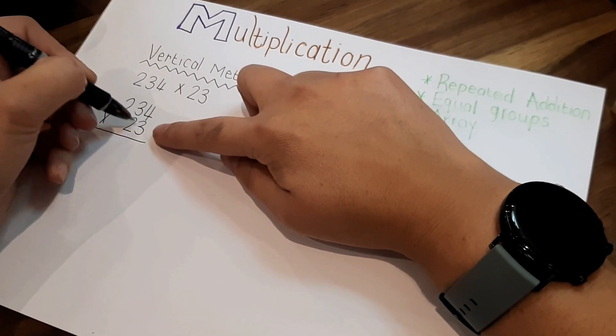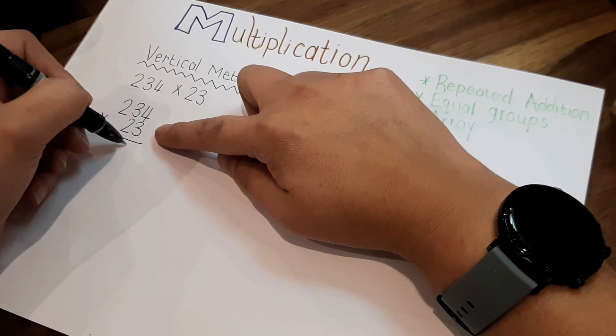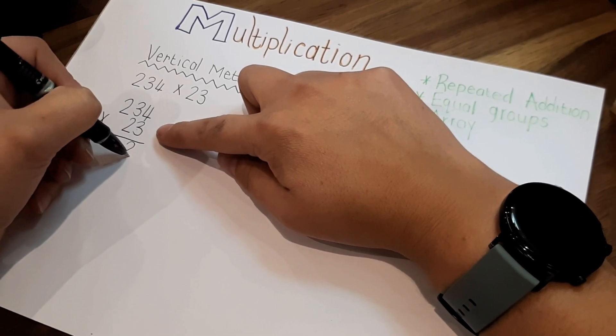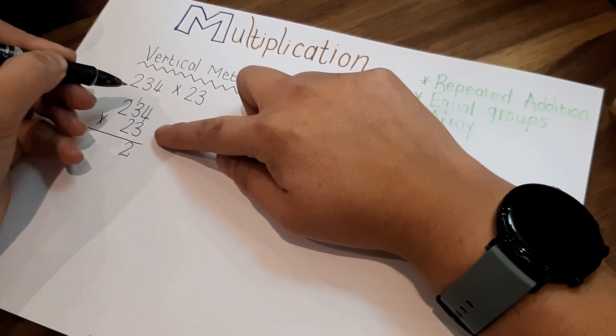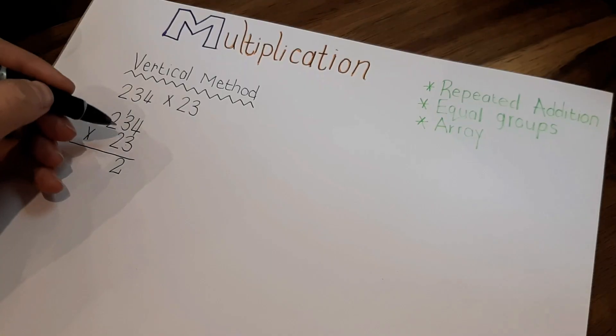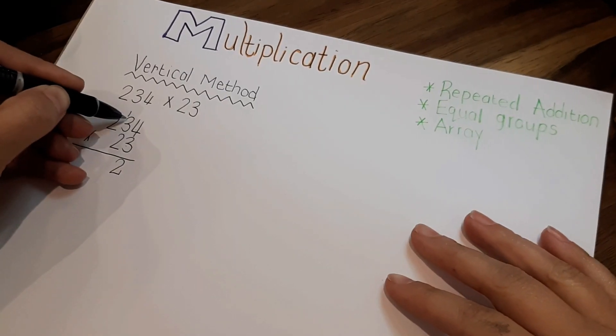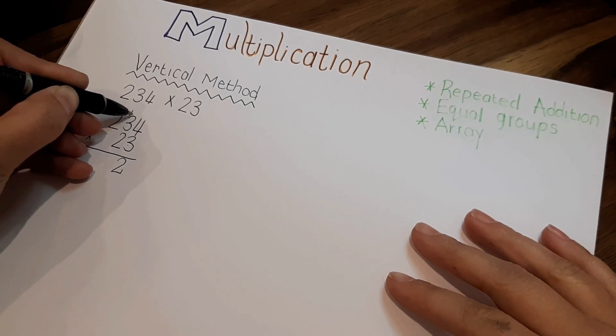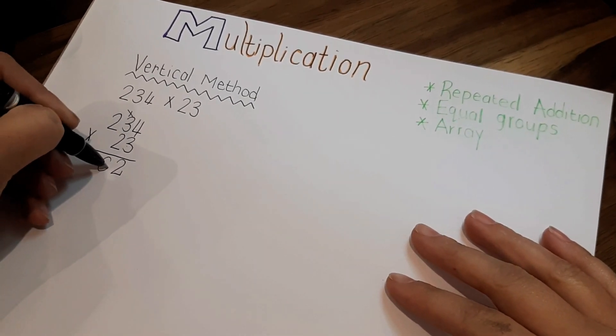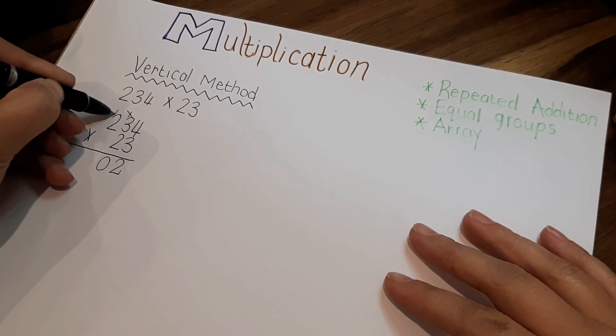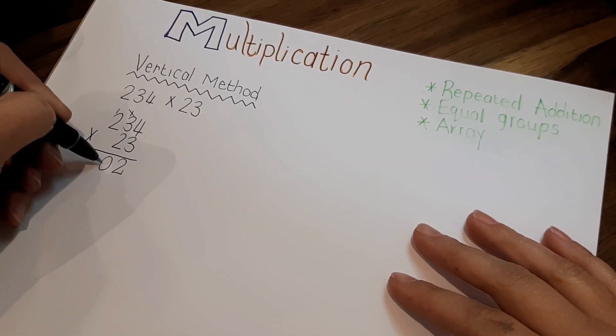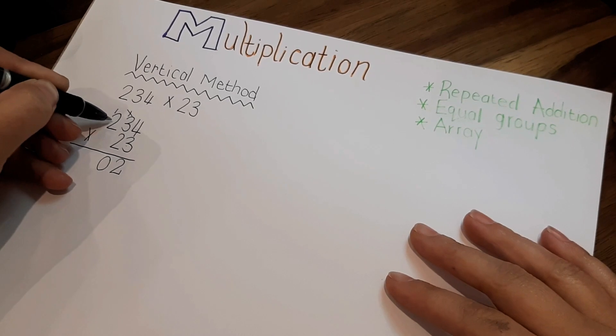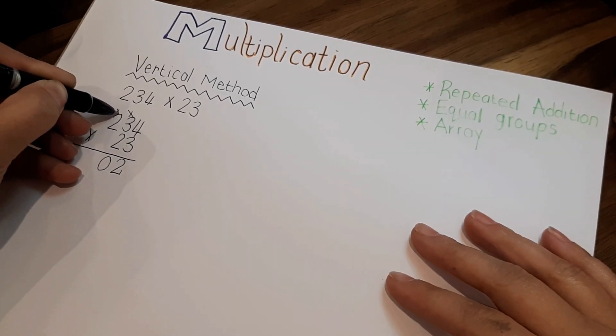We start at the back with the units. 3 times 4 is 12. Write the 2 and you carry over the 1. There is space for only one digit. Next, 3 times 3 is 9 plus 1 is 10. You write the 0, carry over the 1.